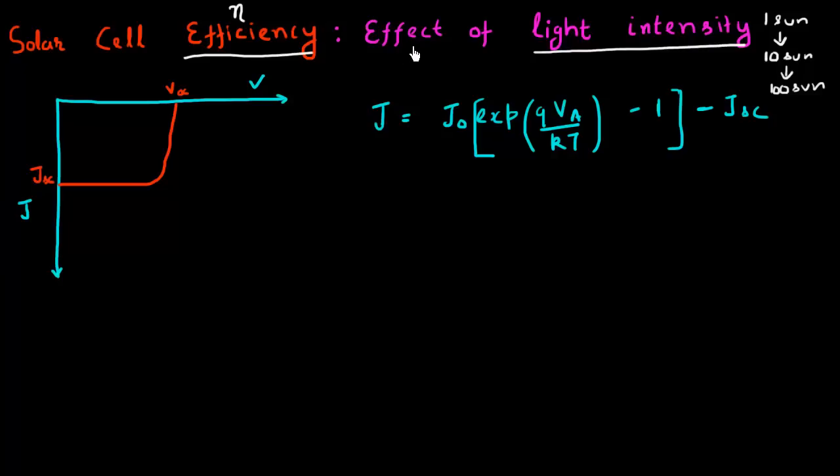So let me start with the basics. I know that my JV relationship for my solar cell can be expressed as this, and I can express the condition of open circuit voltage by equating the total current equal to zero. So at open circuit condition, my J or my current density in the cell is equal to zero.